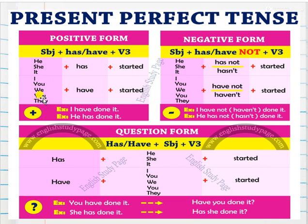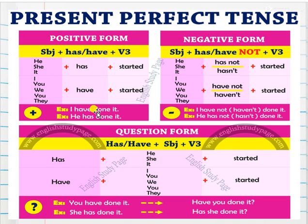I, you, we, they — after those, use 'have' plus 'started'. For irregular verbs, for example: do, did, done. 'I have done it.' 'He has done it.'